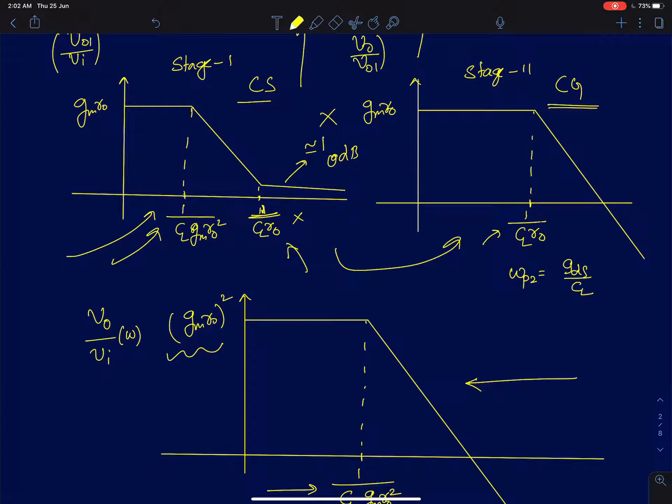So that's what we will be now trying to validate these results through simulations. We look at the frequency response of this intermediate node and the frequency response of the overall cascode amplifier and we will show that the occurrence of the zero and all that.